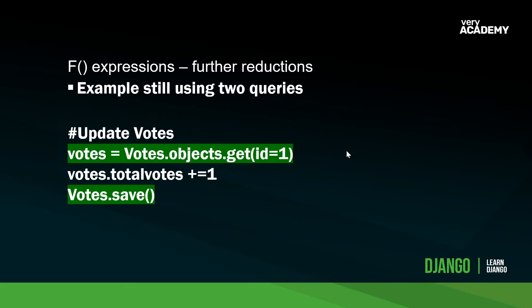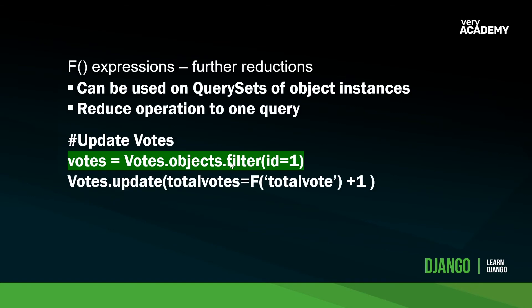In our example, it's still the case that we're utilizing two queries — the get and the save. Let's look at how we could use F expressions to further reduce the number of queries. We can do this by using F expressions with update. Here's an example used on a queryset of object instances: using objects.filter(ID=1) to obtain one item from the database and then performing an update utilizing F expressions to increment the total_votes field.